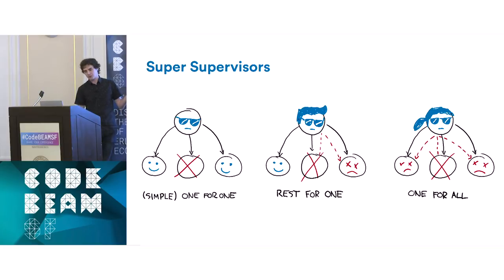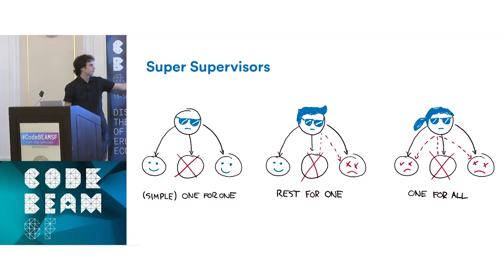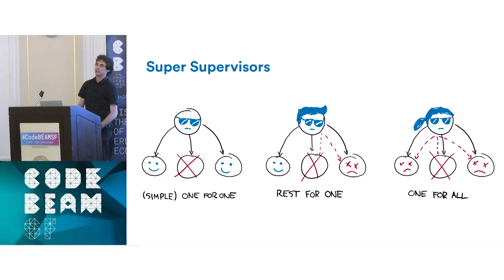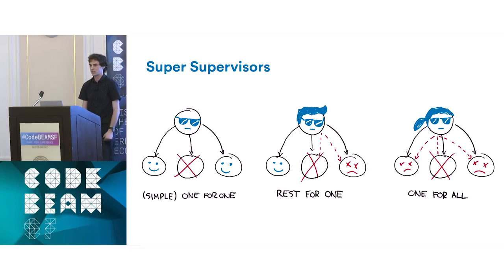There are three broad supervisor strategies. One-for-one: if the child dies, it's the only one restarted. Rest-for-one implies a linear dependency between children — C depends on B, which depends on A; if any one dies, you kill the rest. One-for-all is what you use when there's a dependency between all children — if one goes away, it's simpler to kill them all and go back to a known state. These three strategies, along with permanent, transient, and temporary child types, are all we need.